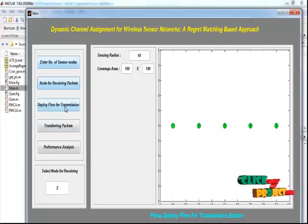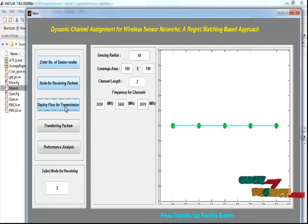And by pressing enter, then we have to press the Deploy Flow for Transmission button. By pressing the Deploy Flow for Transmission, we perform the channel assignment for every node to the selected nodes. Here the frequency for channels are represented for every flow.